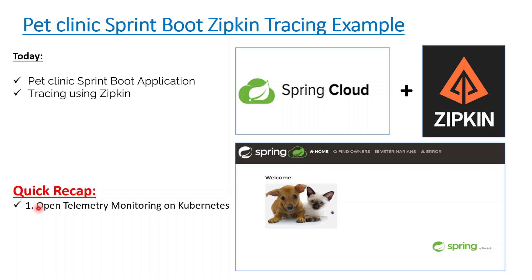Today we'll be looking at everything in a Docker-based environment, so that if you are using any application in a Docker environment, you know how to enable tracing. Today we'll be using another tool called Zipkin, which is used for distributed tracing. We'll quickly spend around 30 seconds on what distributed tracing is.